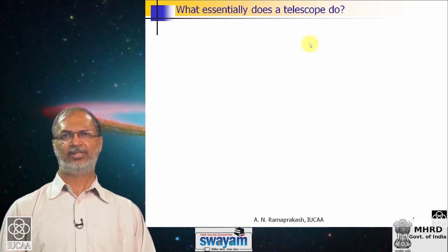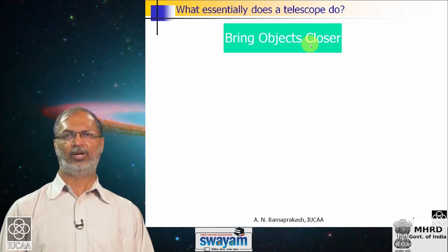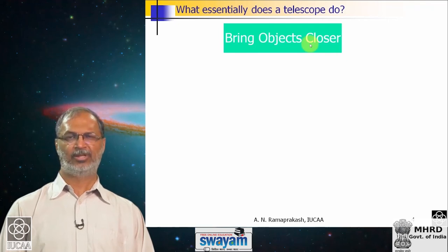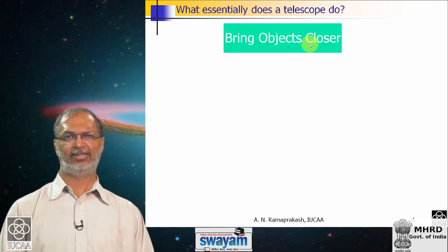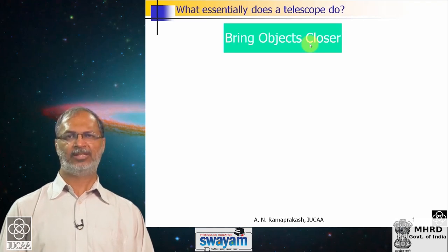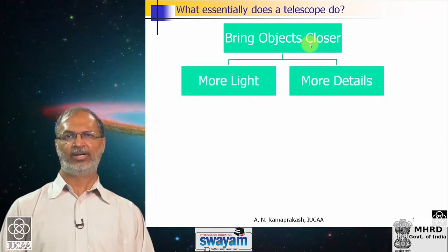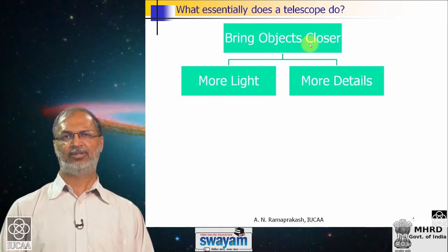Let us try to understand what exactly a telescope does for an astronomer. If you ask a child to look through a telescope, a child would say that the object is appearing very close — closer than what you would see with your eyes directly. So telescopes are supposed to bring objects closer. There are two aspects to this: one is that when an object comes closer, you are going to collect more light from that object; the other is that when the object comes closer, you are able to see more details.